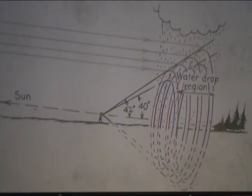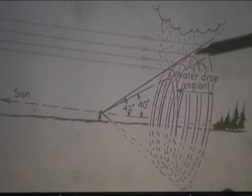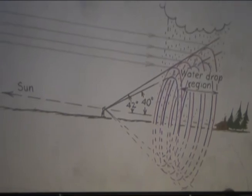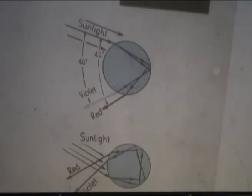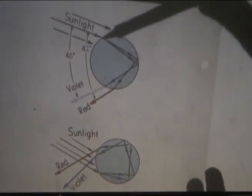Now sometimes you can see two rainbows at once. One is brighter than the other and one is bigger than the other and the colors are inverted. So the reason for that is this.